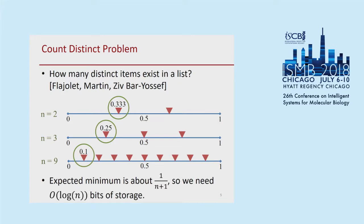This is easy to get a feel for. If you take a single random number between zero and one, the expectation is one half. With two random numbers, the expectation of the minimum is one third. Three random numbers, the expectation is one fourth. Nine random numbers, the expectation is one tenth. The more distinct items in the set, the smaller the minimum hash value is. And so this can be used to estimate the size of the set by just inverting it. The variance is high if you do this only once, but you can repeat it k times with different hash functions. As with any experiment, the standard error of the mean decreases by a factor of root k — so with just 100 trials you get about 10% error.